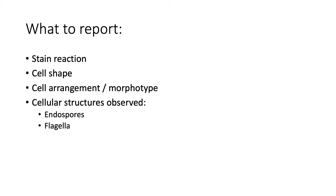So, how do we report our staining results? In both gram stain and acid-fast staining, this is how you should do it. First, your stain reaction, followed by your cell shape, and then your cellular arrangement or morphotype. And lastly, if you see any cellular structures such as endospores or flagella, you should also report these.